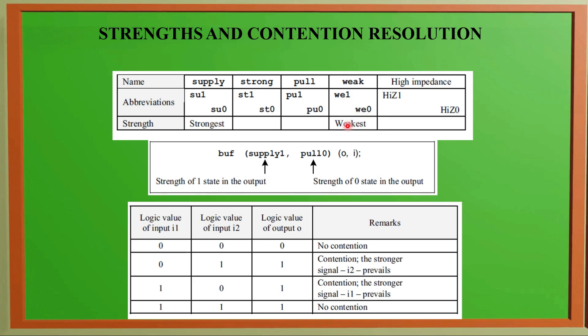We may have high impedance values: High Impedance 1, High Impedance 0. For example, if we are using a buffer with Supply 1, that means strength of 1 state in the output. This buffer has strength of 0 state in the output, and we define it as output comma input.